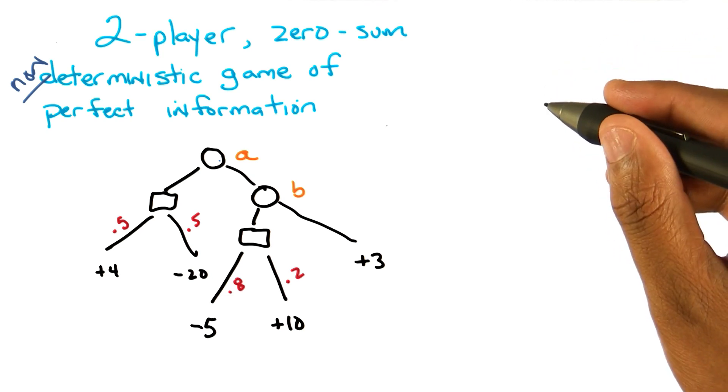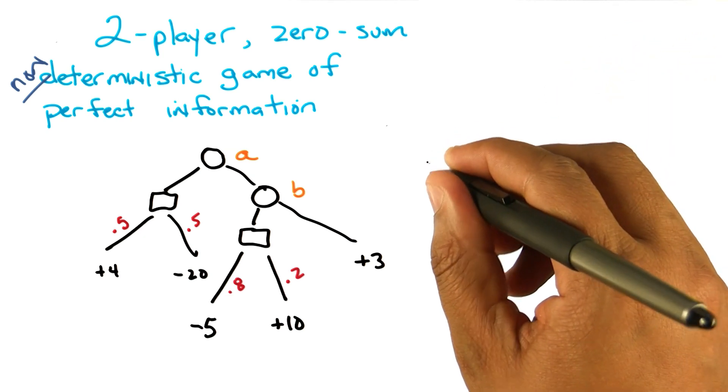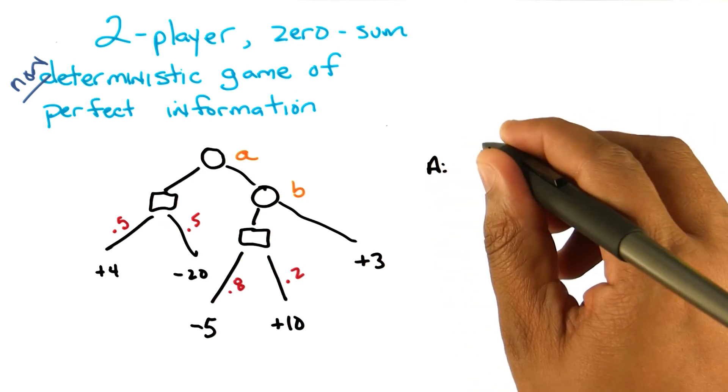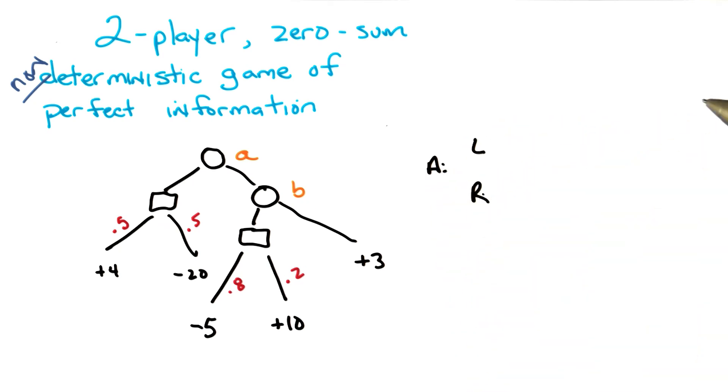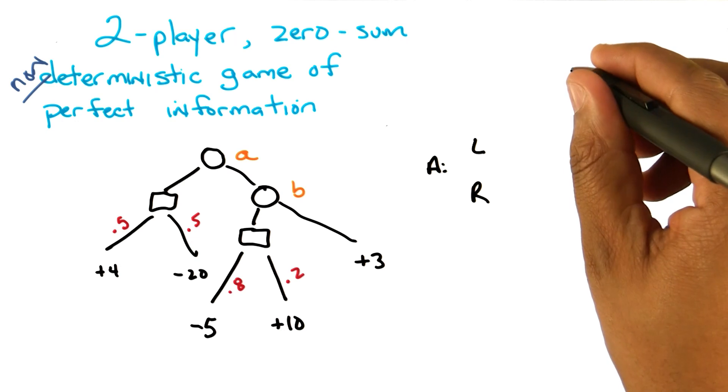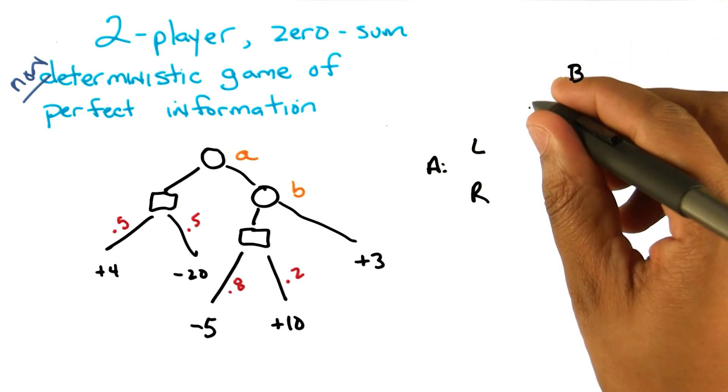So what are A's strategies? I would have called them left and right, but they're not labeled. Yeah, well, let's do that. Let's call them left and right. A can go left or A can go right. What about B's strategies? B can go left or right.